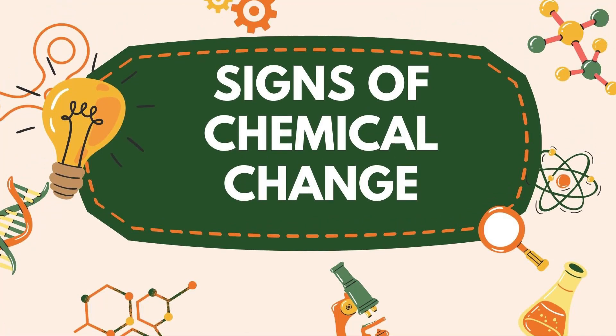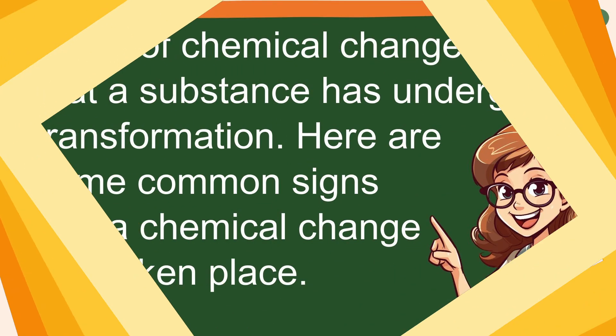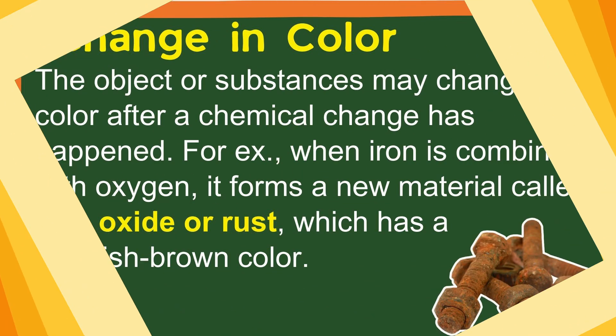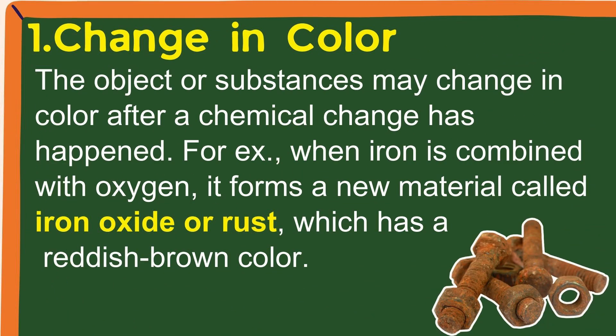Signs of chemical change: Signs of chemical change show that a substance has undergone transformation. Here are some common signs that a chemical change has taken place. 1. Change in color — the object or substance may change in color after a chemical change. For example, when iron is combined with oxygen, it forms a new material called iron oxide, or rust, which has a reddish-brown color.